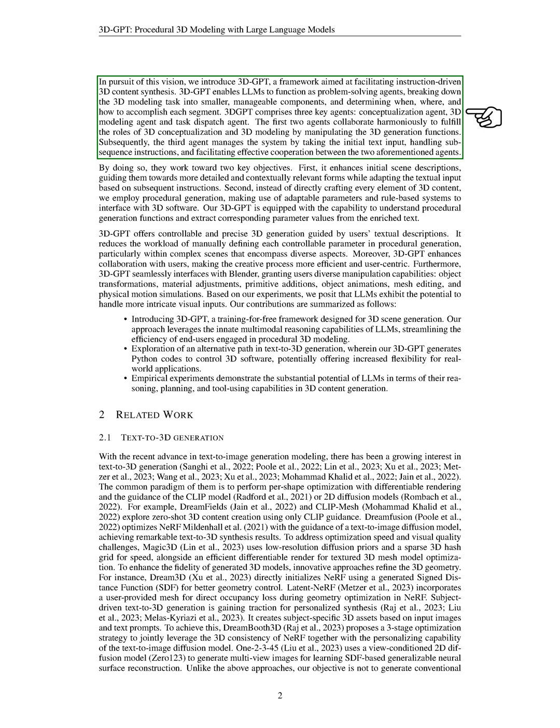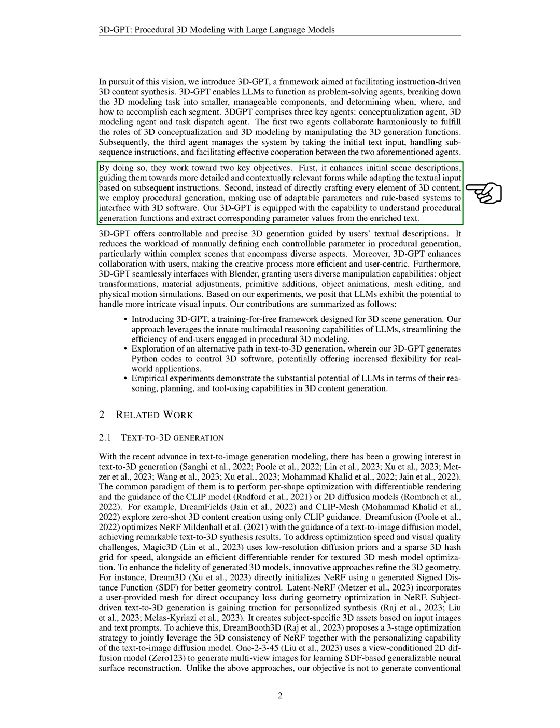3D GPT consists of three key agents: a conceptualization agent, a 3D modeling agent, and a task dispatch agent. These agents work together to enhance initial scene descriptions, guide them towards more detailed and contextually relevant forms, and adapt the textual input based on subsequent instructions. Instead of directly crafting every element of 3D content, we use procedural generation, which interfaces with 3D software using adaptable parameters and rule-based systems. Our 3D GPT can understand procedural generation functions and extract corresponding parameter values from the enriched text.